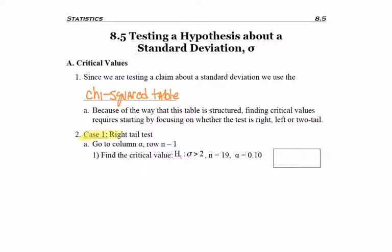For the critical value, case one, a right-tailed test: we'll be going to column alpha, the significance level, and row n-1. This is the easiest case.